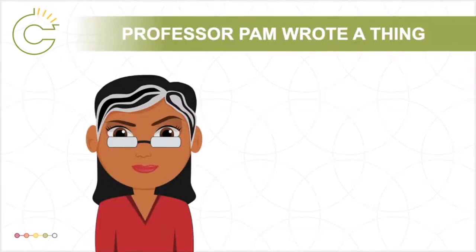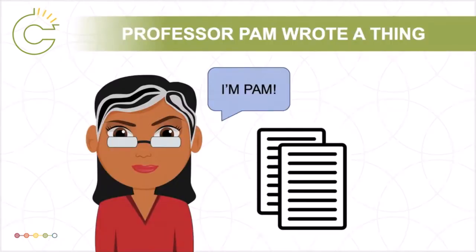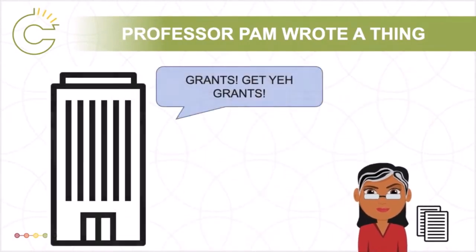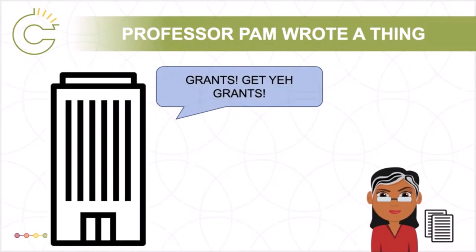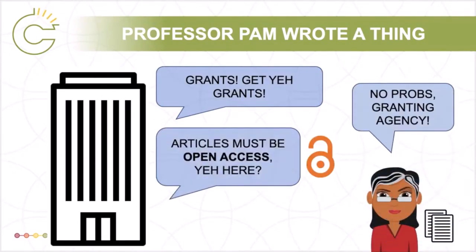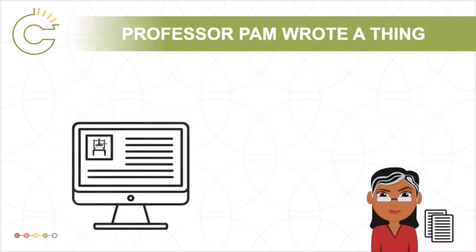Professor Pam Peterson has written an article that summarizes the results of a grant-funded research project. The granting agency requires that the article be made available in an open-access environment within one year of publication. However, when Pam attempts to upload and submit her article on the publisher's website, she is directed to an automated process in which she is prompted to click through and accept the terms of a publishing agreement.